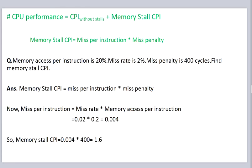Here we have a formula for CPU performance. CPU performance equals CPI without stalls plus memory stall CPI. This memory stall CPI is equal to misses per instruction multiplied by miss penalty.